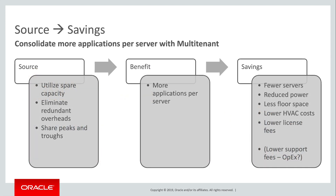So let's map source to savings in this category of capital expense reduction. Reduce CPU and memory by utilizing spare capacity, eliminating redundant replication of overheads, and sharing peaks and troughs in load curves. The benefit of all this efficiency is that you get more applications per server. So the savings are that you need fewer servers, consume less power, occupy fewer floor tiles in the data center, and pay lower HVAC costs. You even reduce your license fees. Because support costs are typically a function of license fees, those will be reduced too — although strictly speaking that's an operating expense, the savings are derived from the same source.